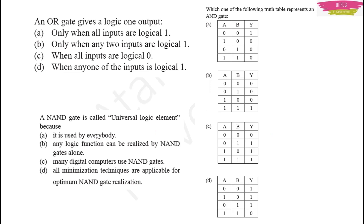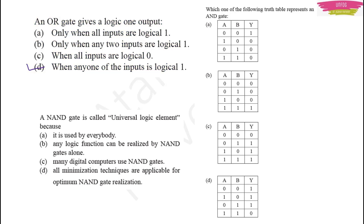Here are three example MCQs for HSTR or CRICE exam. First: an OR gate gives a logic 1 output when at least one of the inputs is logically 1 — whether inputs are 1,0 or 0,1 or 1,1. Second: a NAND gate is called a universal logic element because you can make any logic function using NAND gates alone — if you use only two NAND gates, you can make an AND gate — that is why it is called a universal logic gate.